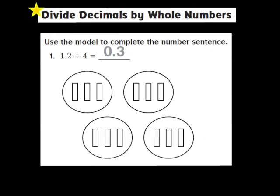Let's take a look at question number 1. Question number 1 has already been completed for you, but it's a good example of how to use a model to complete the division problem. For question 1, we have 1 and 2 tenths being divided by the whole number 4. Step number 1, if we're going to use the model, is to draw a quick picture to represent the dividend, and our dividend here is 1 and 2 tenths.